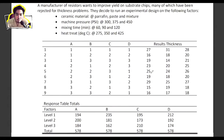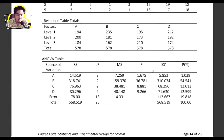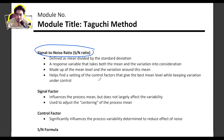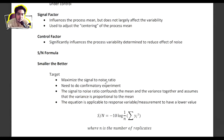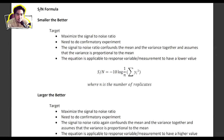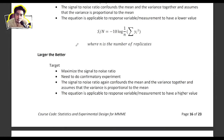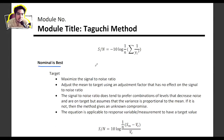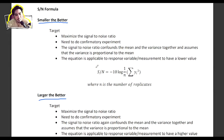The SN ratio formula differs depending on what you want to achieve. There are three cases: smaller is better (minimize the response, e.g., number of defects), larger is better (maximize the response, e.g., weld strength — this is our welding example), and nominal is best (target a specific value). Each case uses a different SN ratio formula.